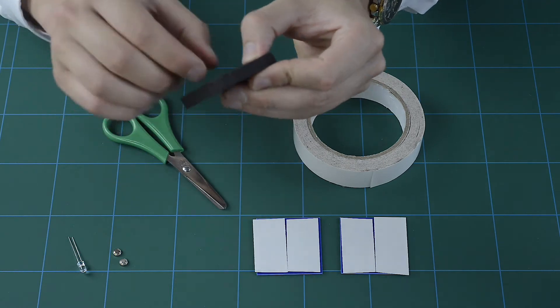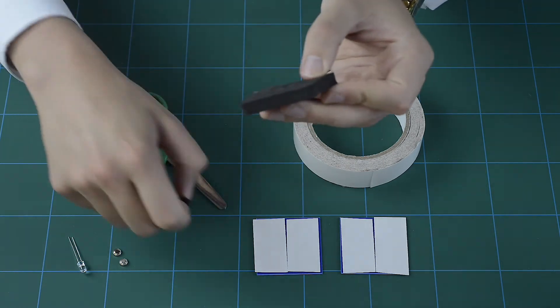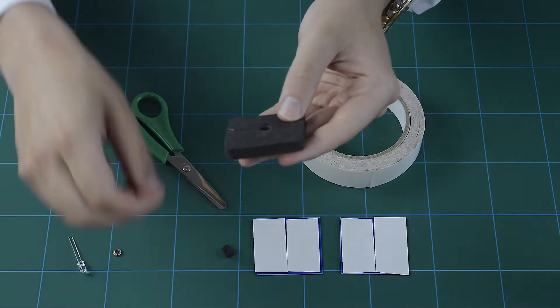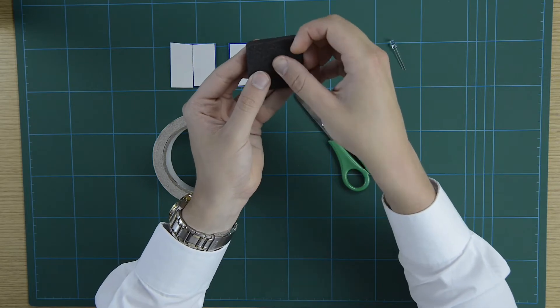Then, remove the centre piece of foam and place the coin cell batteries in the hole you've just created, ensuring that both batteries have the positive side facing up.